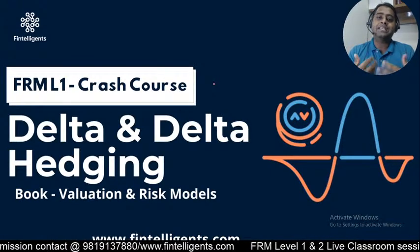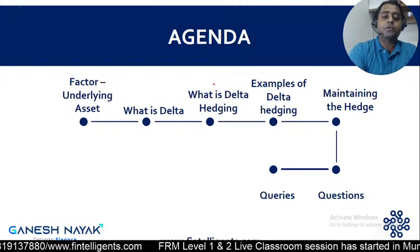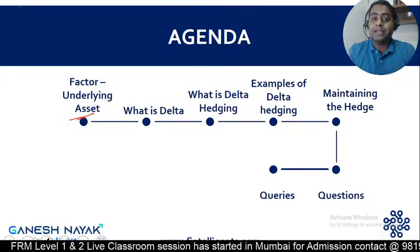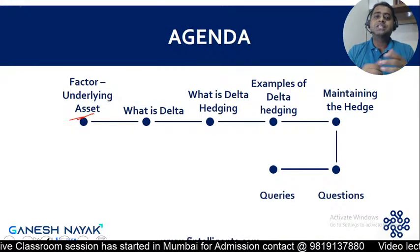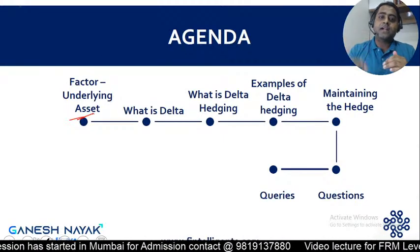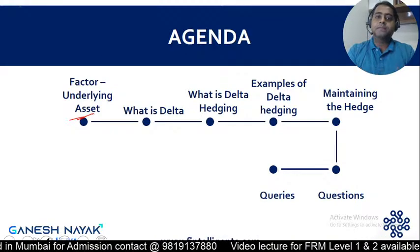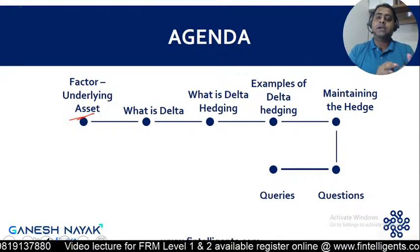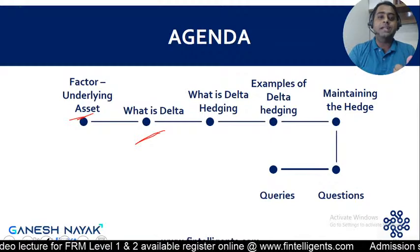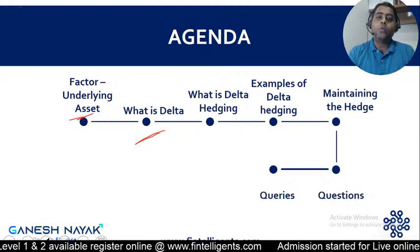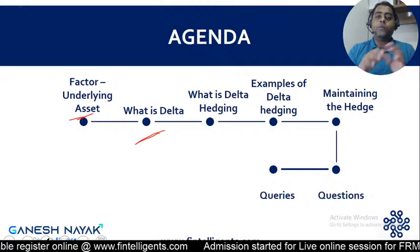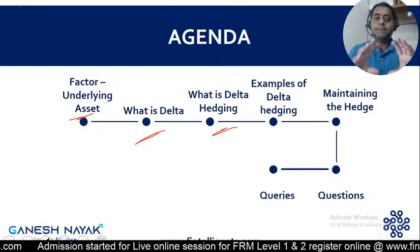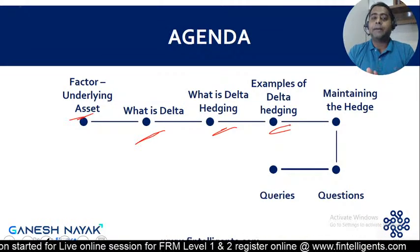The first point of the agenda is about which factor impacts the option price. In the properties of options chapter, there are certain factors that impact the option price. One of those factors is the underlying asset, and that is where Delta comes into picture. I'll give you a brief about what happens when there is a change in the underlying asset and how it impacts the call and put option, then a brief introduction about call Delta and put Delta.